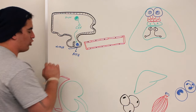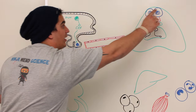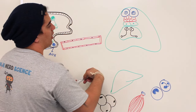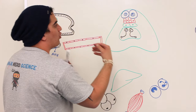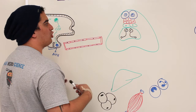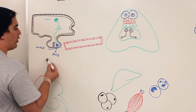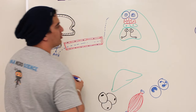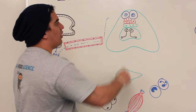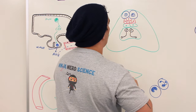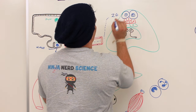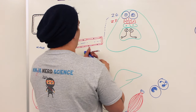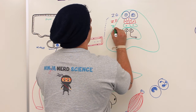Adrenocorticotropic hormone travels to the adrenal gland, which has two main components. The outer adrenal cortex is made up of three layers: the zona glomerulosa (blue cells), the zona fasciculata (red cells), and the zona reticularis (green cells). The inner portion is the adrenal medulla.